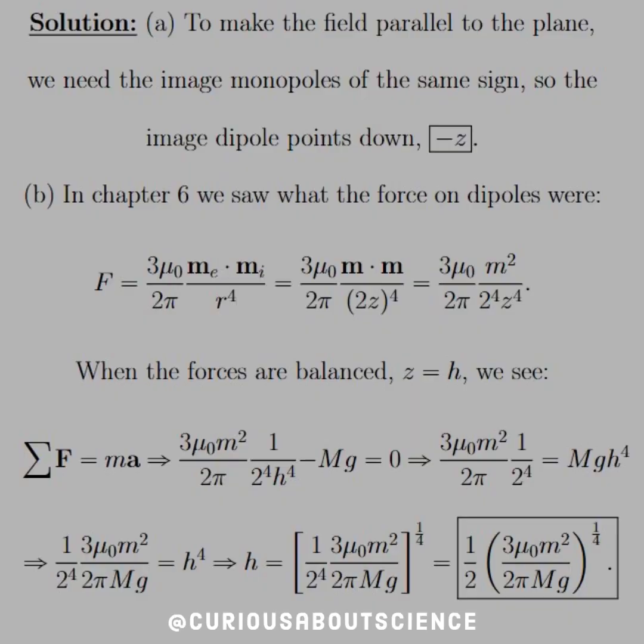So in chapter 6, we saw that the force on dipoles were 3 mu naught over 2 pi, M_e times M_i over R to the fourth. Here M_i is the image dipole and M_e is the external dipole. But you see that they're both the same thing, just one's plus, one's minus, no big deal there. Again, since one is in the opposite configuration, their dot product works out quite nice, they're in the same plane. So minus times minus gives you positive, and you're fine to work there. Note that R is the separation distance between the two, and since both are a distance z apart, we get 2z. So let's plug that through, and we see here that simplifies.